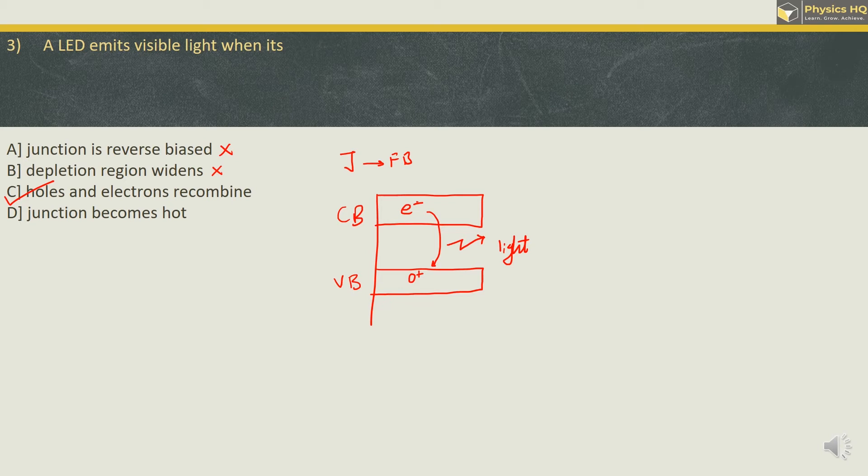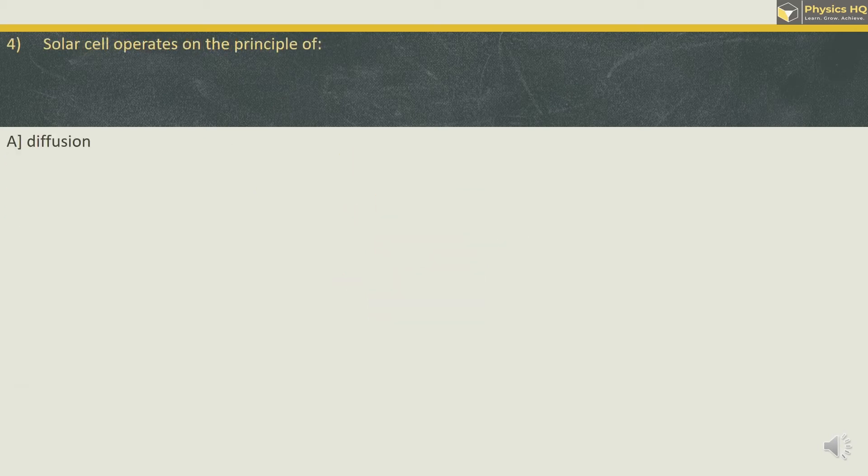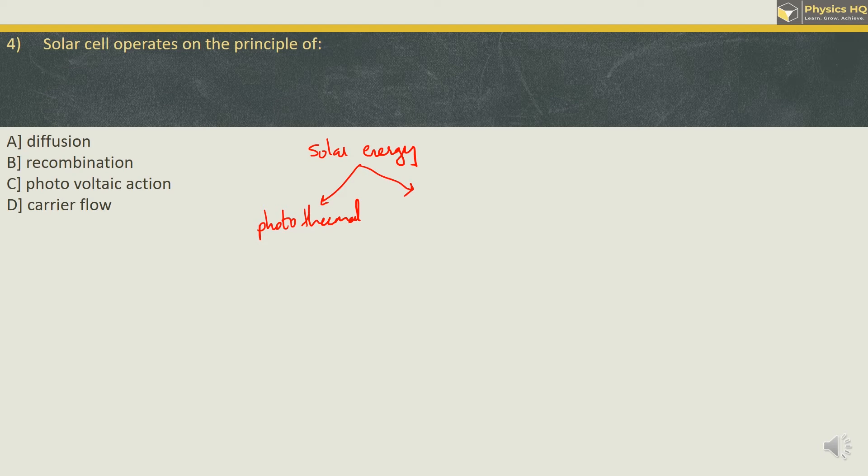Let us go ahead to the next MCQ. Solar cell operates on the principle of diffusion, recombination, photovoltaic action or carrier flow. So solar energy as we know it is freely available and it is basically harnessed by two methods. The first method is photo thermal method. In photo thermal method the solar energy is converted into heat energy. The example for it is solar cooker or heater. And the other one is based on photovoltaic action, in which the solar energy is converted into electrical energy. And therefore the correct option is option C.